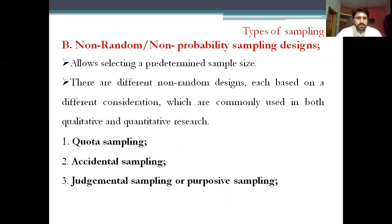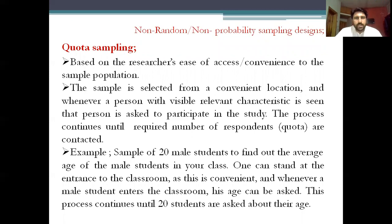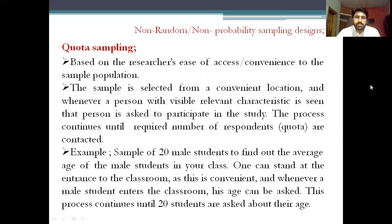The first type is quota sampling. As the name suggests, you have a required number of participants in your study — that is your quota. When you reach that quota, the sampling concludes. It is based on the researcher's ease of access or convenience to the sample population. The sample is selected from a convenient location, and whenever a person with visible relevant characteristics required by the study is seen, that person is asked to participate. The process continues until the required number of respondents is contacted and the information is collected.